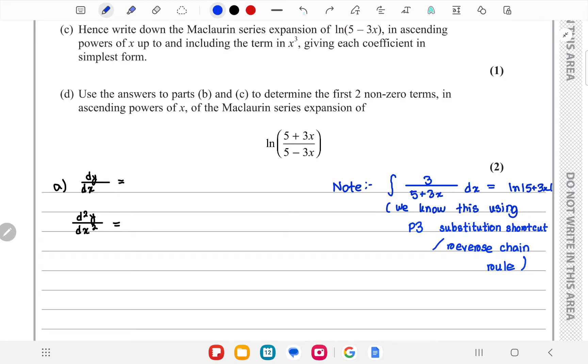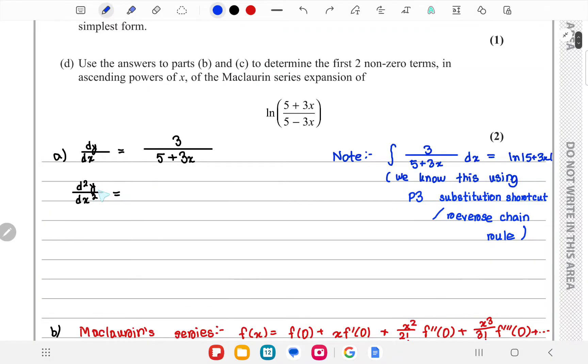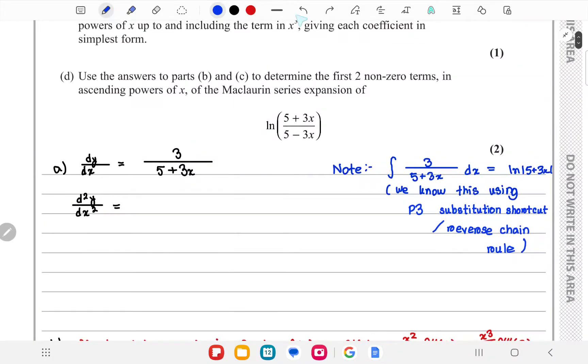Now moving on to d²y/dx², we have to write dy/dx like this and then use the chain rule to differentiate this. We consider this as u and use the chain rule here, so we get this expression and simplify it further.